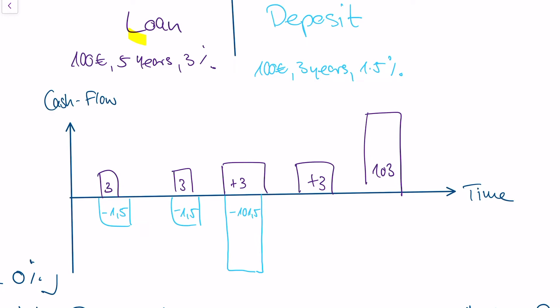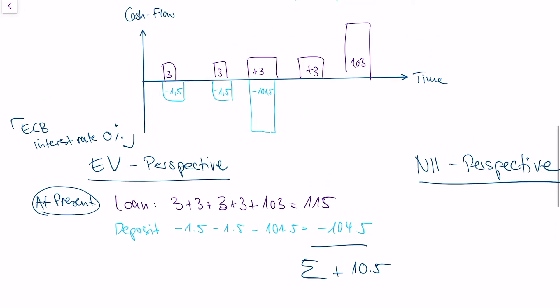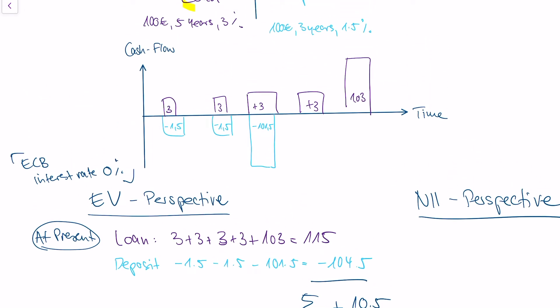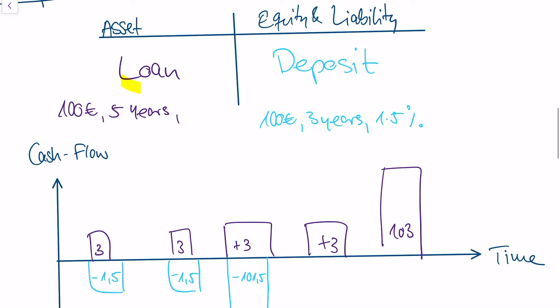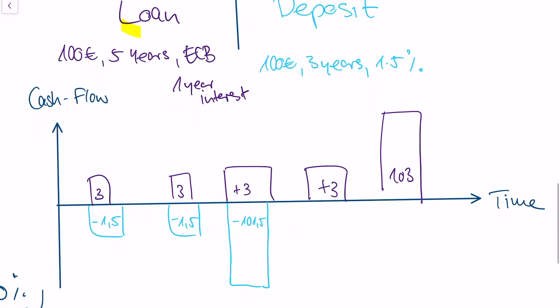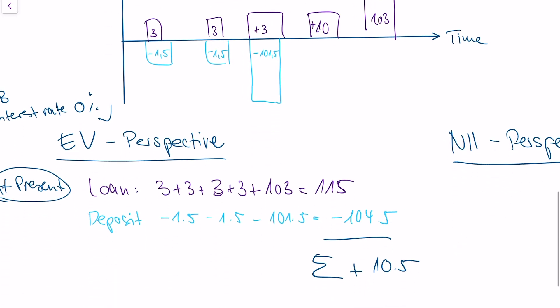To recap: we're looking at interest rate risk in the banking book. With both perspectives, you look at the status quo and then try to understand what actually happens when interest rates change. Maybe the loan on your asset side doesn't have a fixed interest rate but a variable one — for example, the ECB one-year interest rate, which you don't know in advance for five years. So you could get 3 euros, but you might also get only 1, or you could get 10.